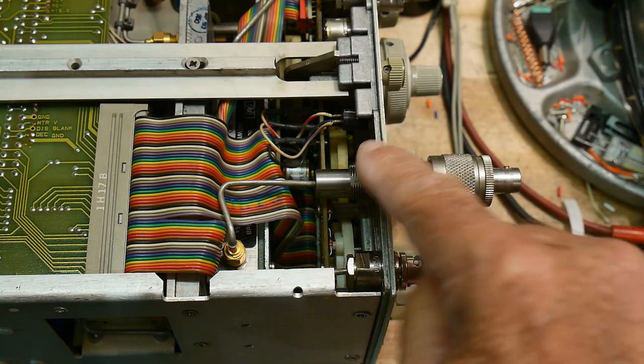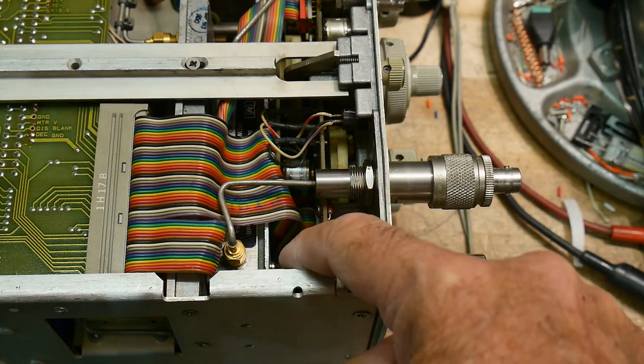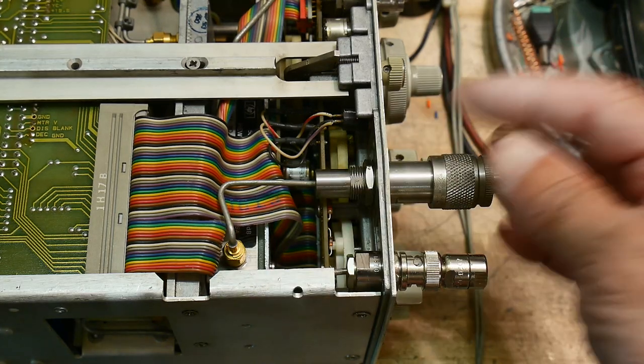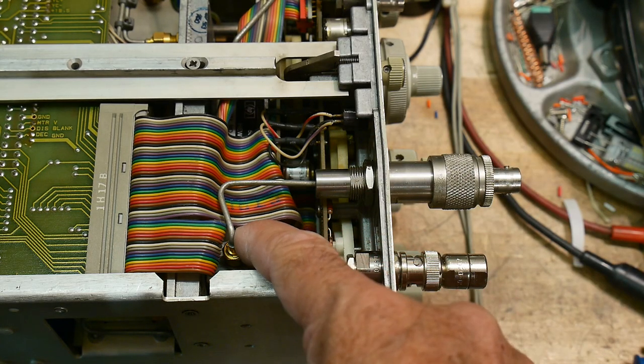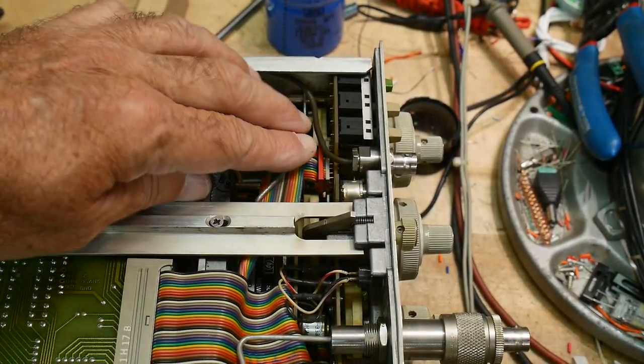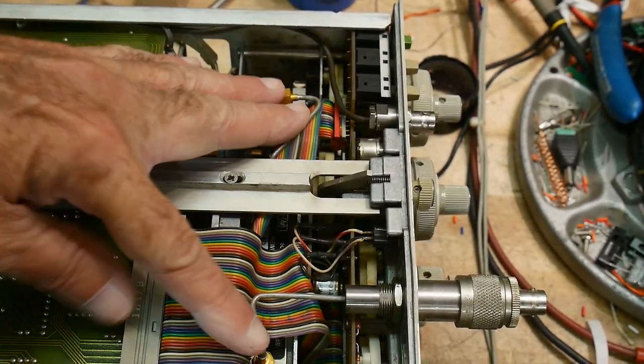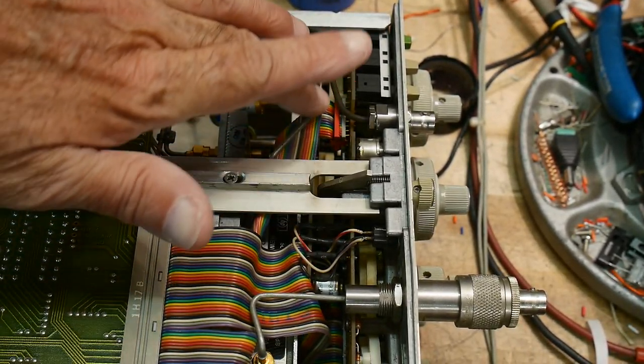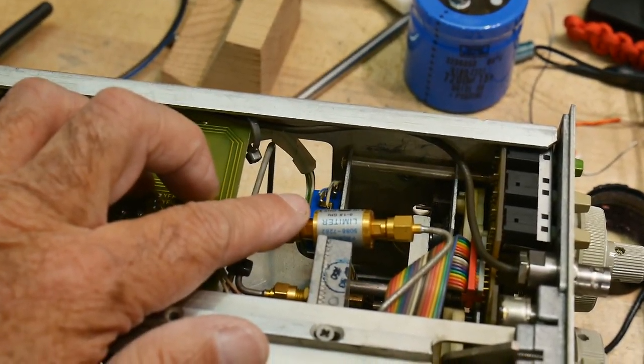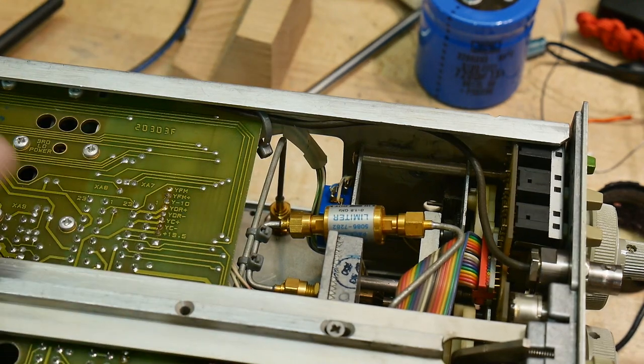It comes in here and goes along here and goes into this thing down there, and that thing down there is an attenuator. As you turn the knobs on the front, it steps that attenuator. The output of that attenuator comes out on this little thing here - this is the input to the attenuator, this is the output of the attenuator, and then it goes into this thing. Well, that looks familiar - that's a limiter.